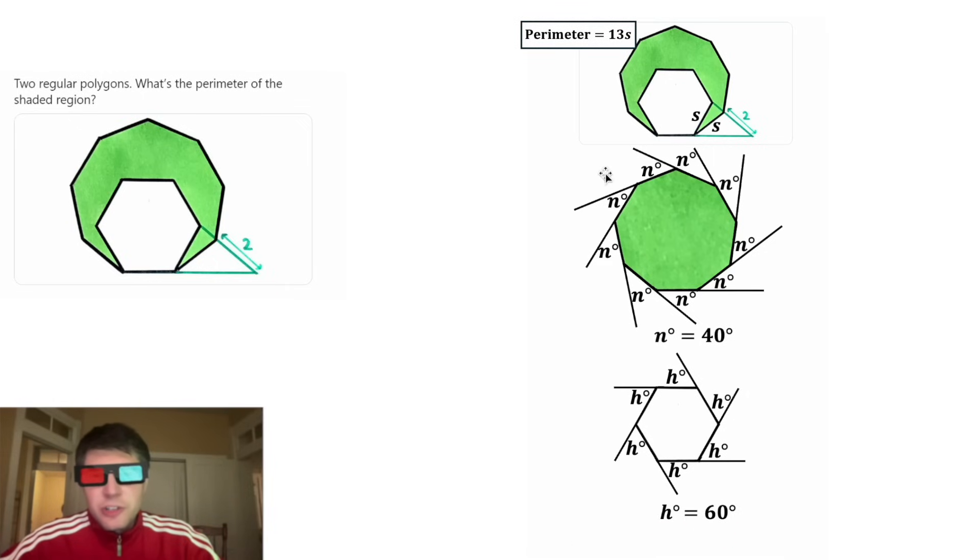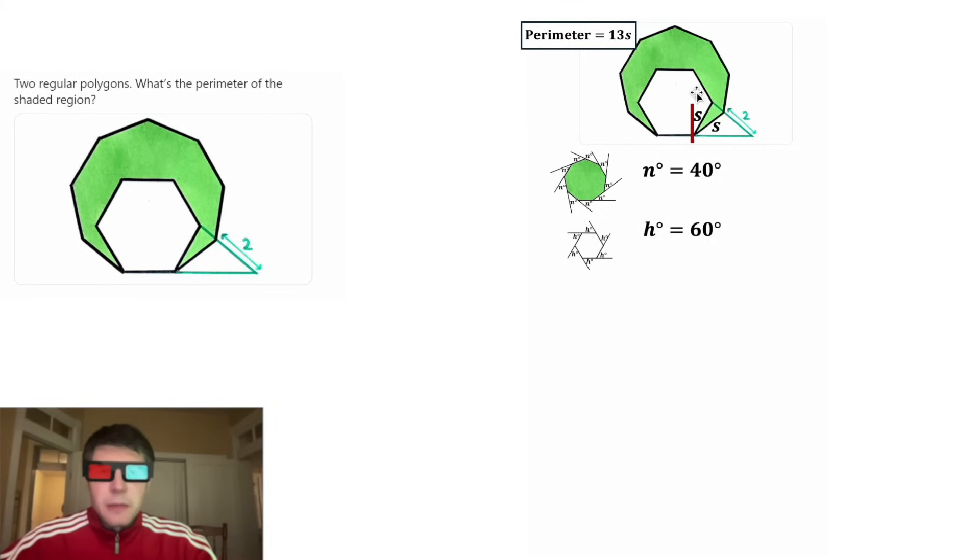So now we know the external angles of a regular nonagon is 40 degrees, and the external angles of a regular hexagon is 60 degrees. Let's smush these up here, and let's make a box right here and zoom into this spot.